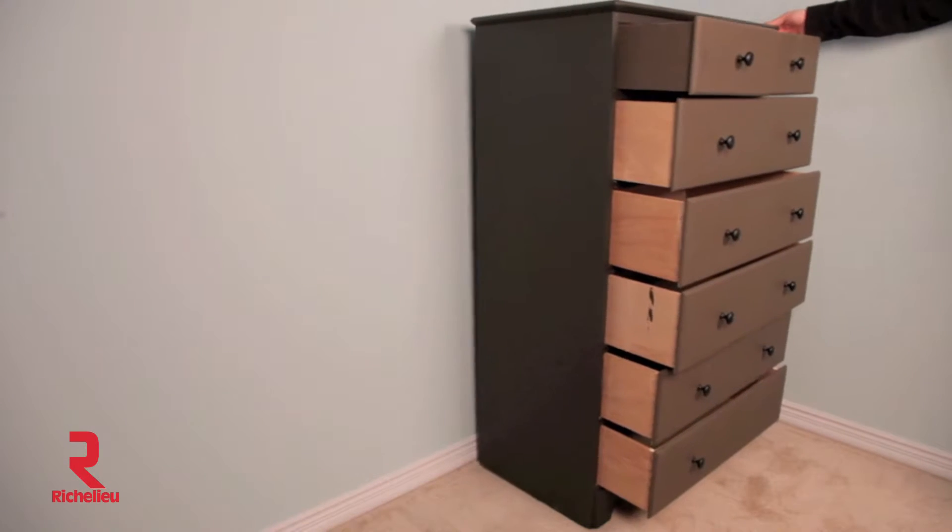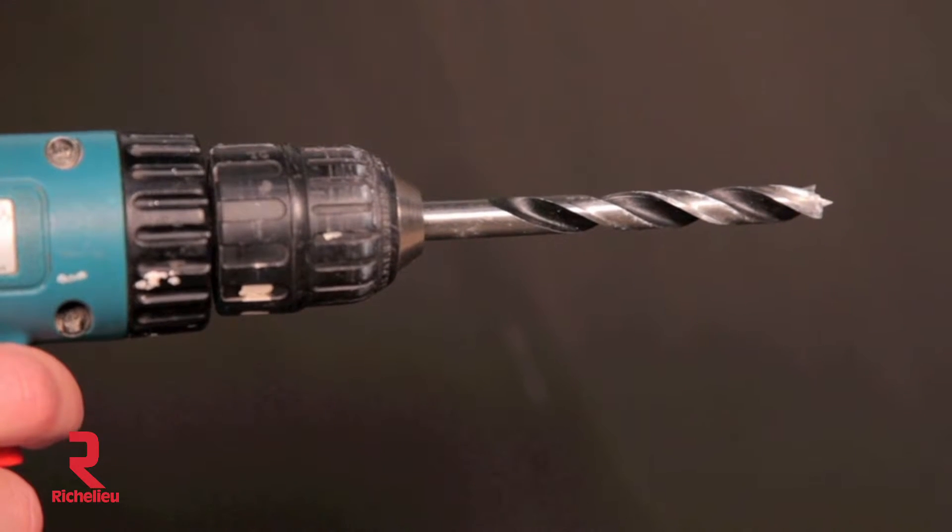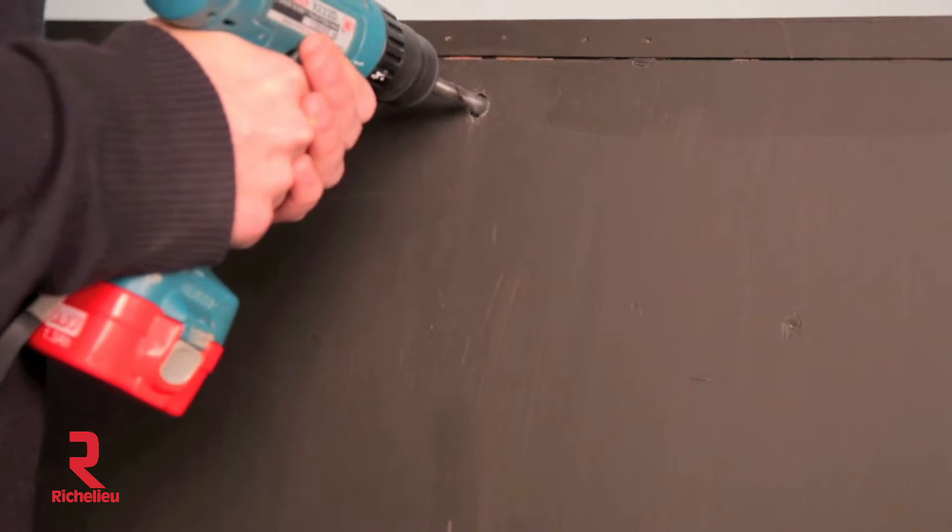When installing the furniture anti-tip kit, use a half inch drill bit to drill a small hole in the back of the furniture.